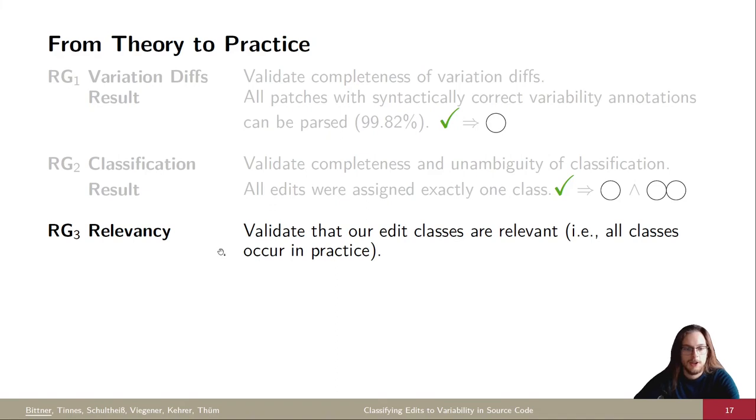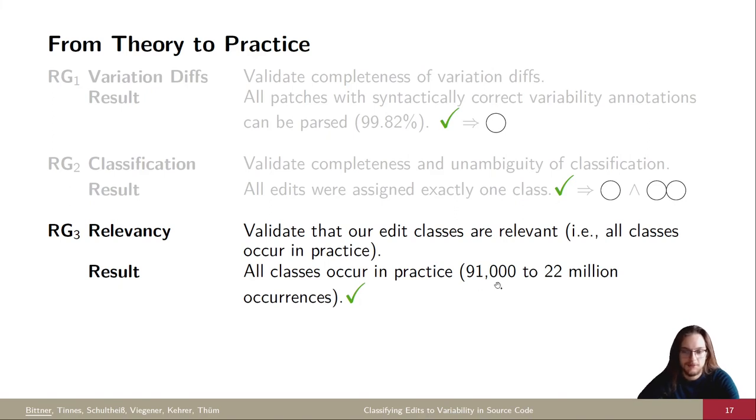Third, we check on relevancy, so we wanted to see if the classes we defined are indeed relevant, which we measure by looking for them occurring in practice. And as a result, we find that all classes indeed occur in practice, starting with 91,000 occurrences for the rarest pattern, and up to 22 million occurrences for the most often pattern.